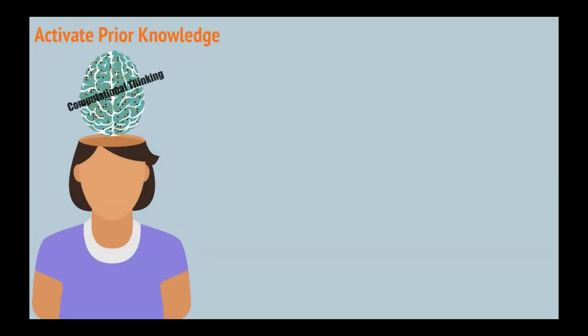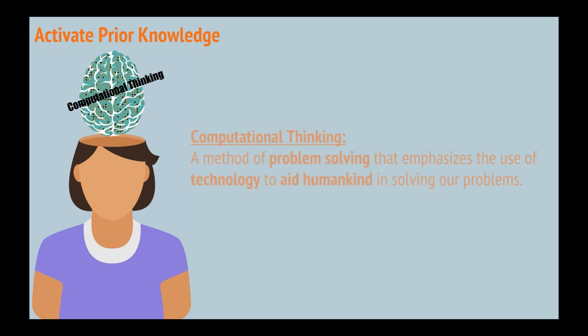First, let's start with a definition of computational thinking, then we'll delve into other similar ideas. Computational thinking is a method of problem-solving that emphasizes the use of technology to aid humankind in solving our problems.